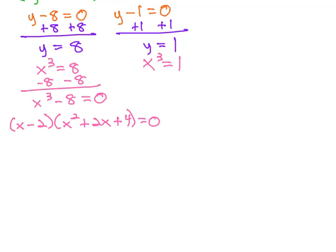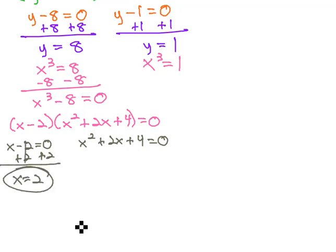And now that we're factored, we can set each factor equal to 0. x minus 2 equals 0, and x squared plus 2x plus 4 equals 0. The first equation solves quickly by adding 2, telling us that x is equal to 2 for our first solution.